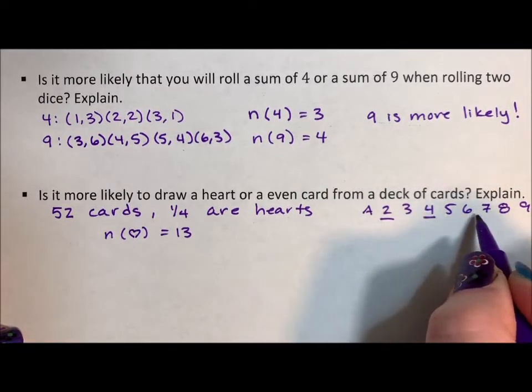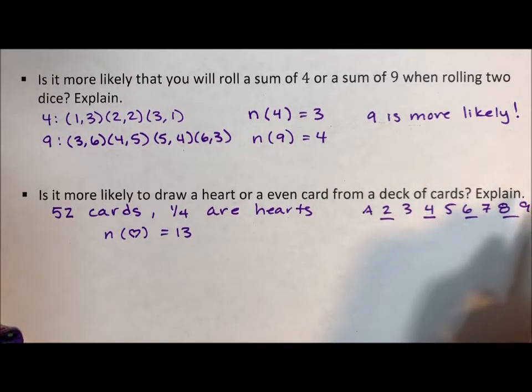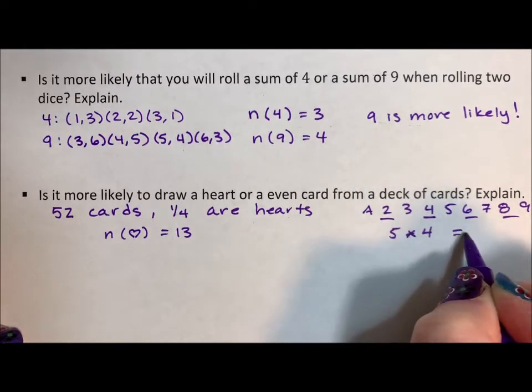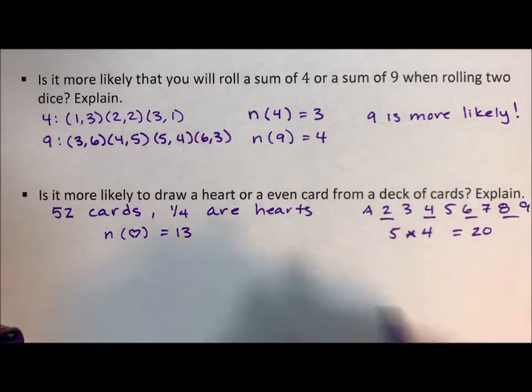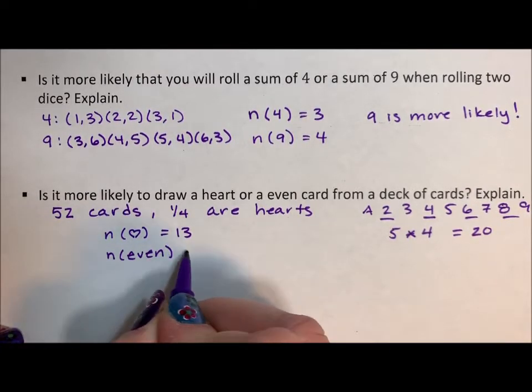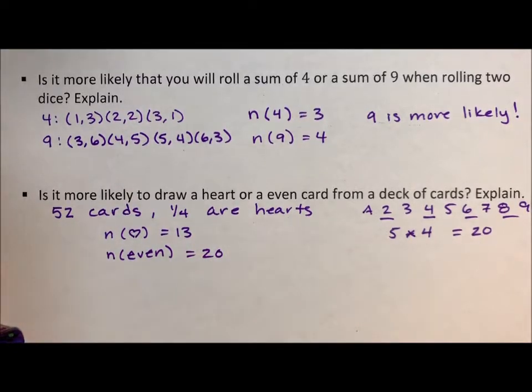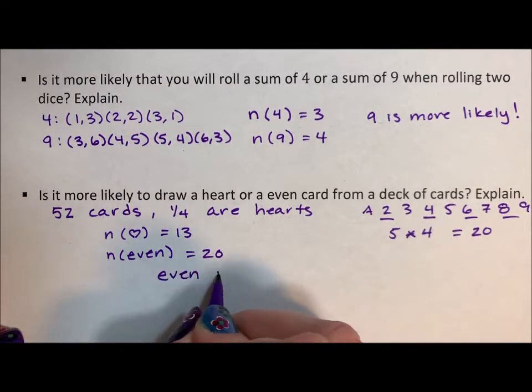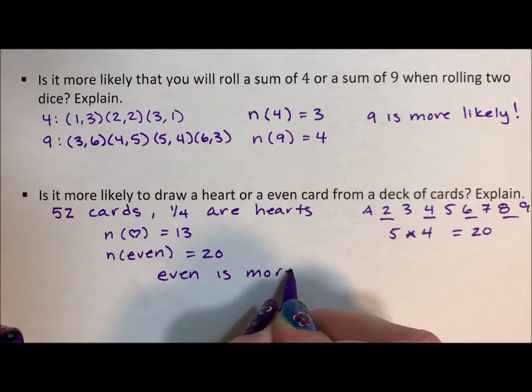The evens are two, four, six, eight, ten. So there are five of them and there are four suits. So there are 20 even cards in a deck. So the number of evens is more likely.